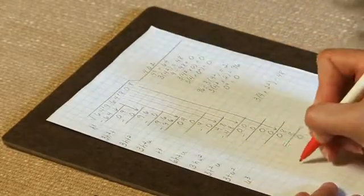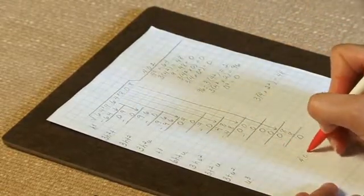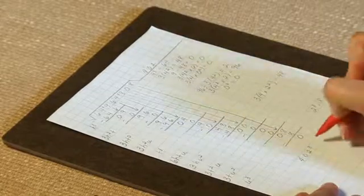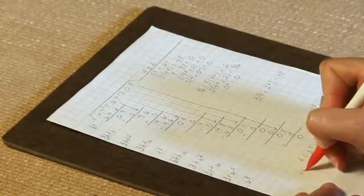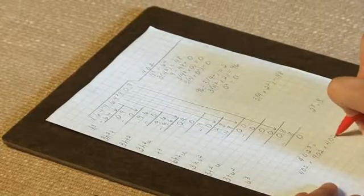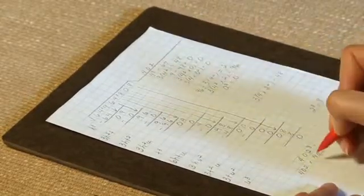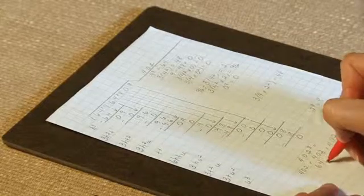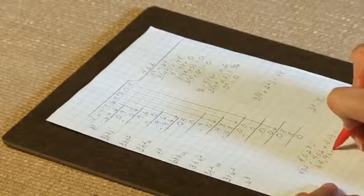402 cubed, or 402 times 402 times 402, is equal to 64,964,808.